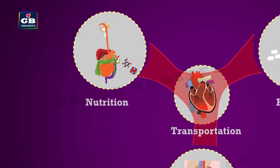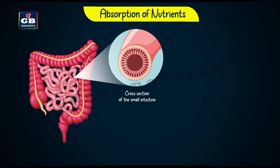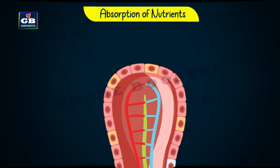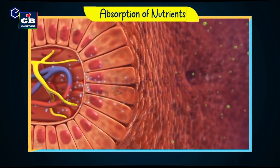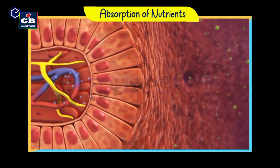But how do these nutrients enter the blood circulatory system? This is called absorption of nutrients. The small intestine has numerous finger-like projections on its inner surface called villi. Blood vessels and lymph vessels are present inside these villi, and nutrients get absorbed into these vessels and enter the bloodstream.